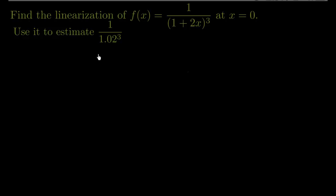Hello, welcome to another video on linearization. This will just be an example. We're going to find the linearization of this function, f(x) = 1/(1+2x)³, at x equals 0, and then we're going to follow it up by using the linearization to estimate 1 over 1.02 cubed.